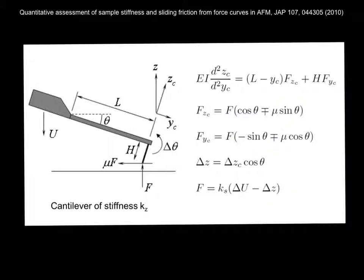in that you can now use that information to either give you the stiffness of the sample, or if you know the stiffness of the sample, you can get the stiffness of the cantilever, or if you know both of them, you can get the friction coefficient.